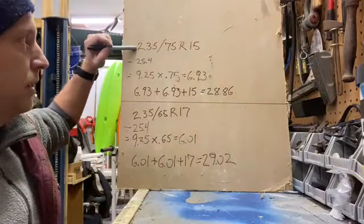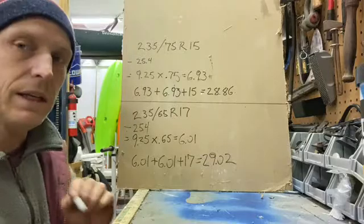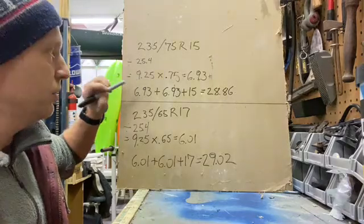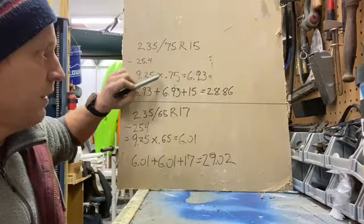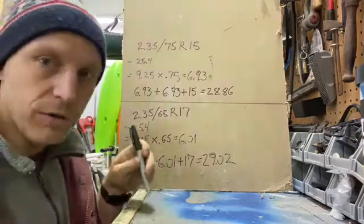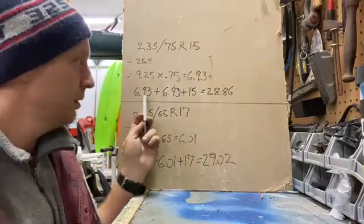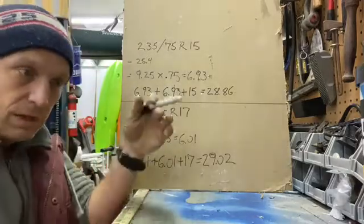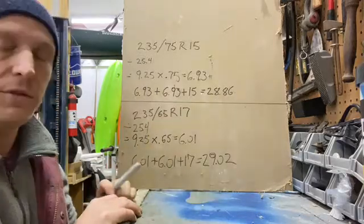235 is the width of the tire in millimeters. Divide that by 25.4 — which is how many millimeters are in an inch — and you get 9.25 inches for the tire width. Take the second number, the sidewall aspect ratio: 9.25 times 0.75 equals 6.93. So your sidewall from where it mounts to the rim to the tread is 6.93 inches. Then 6.93 plus 6.93 — because you have sidewall on either side — plus the 15 inch rim gives you an overall diameter of 28.86 inches.